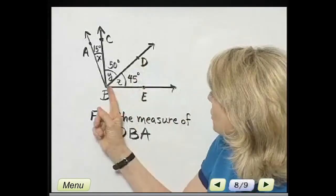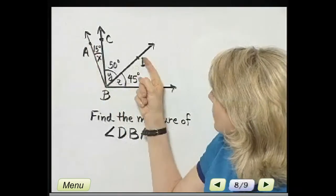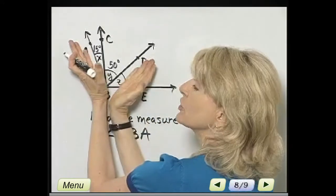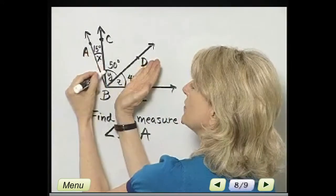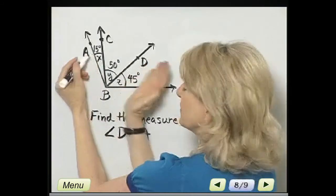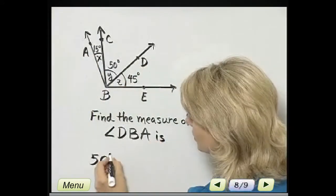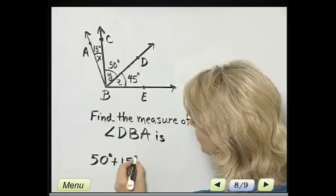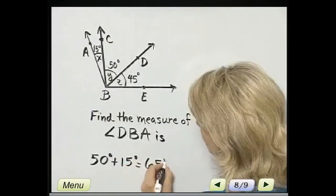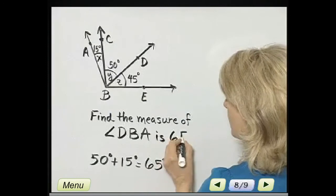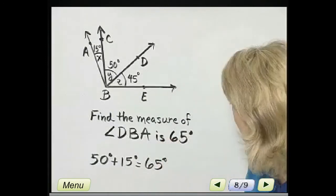D, B, A. All right. There's D, B, A. What does this angle measure? It measures 50 degrees plus 15 degrees. 50 degrees plus 15 degrees, which is 65 degrees. So that angle measures 65 degrees.